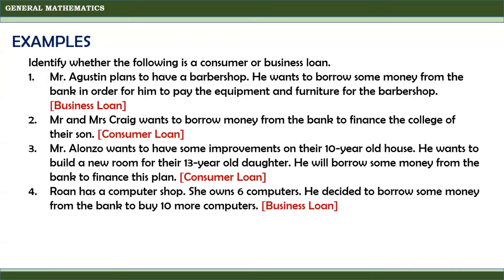For the last one, Roan has a computer shop and owns 6 computers. She decided to borrow some money from the bank to buy 10 more computers. Since the money will be used to expand the computer shop of Roan, this is an example of a business loan.